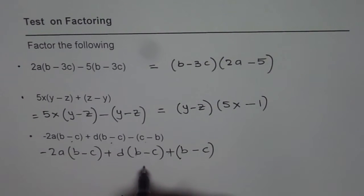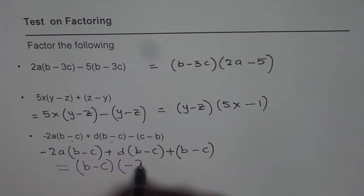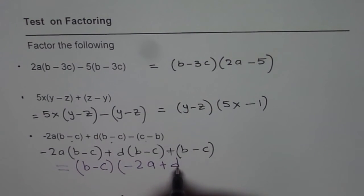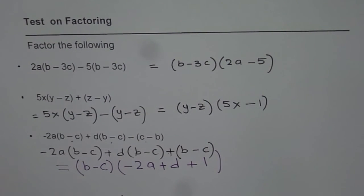And now we can factor. So let me write down this factor here as equals to b minus c is common. You are left with minus 2a in the first term plus d plus 1. And that is the answer. So that is how you can factor these terms.